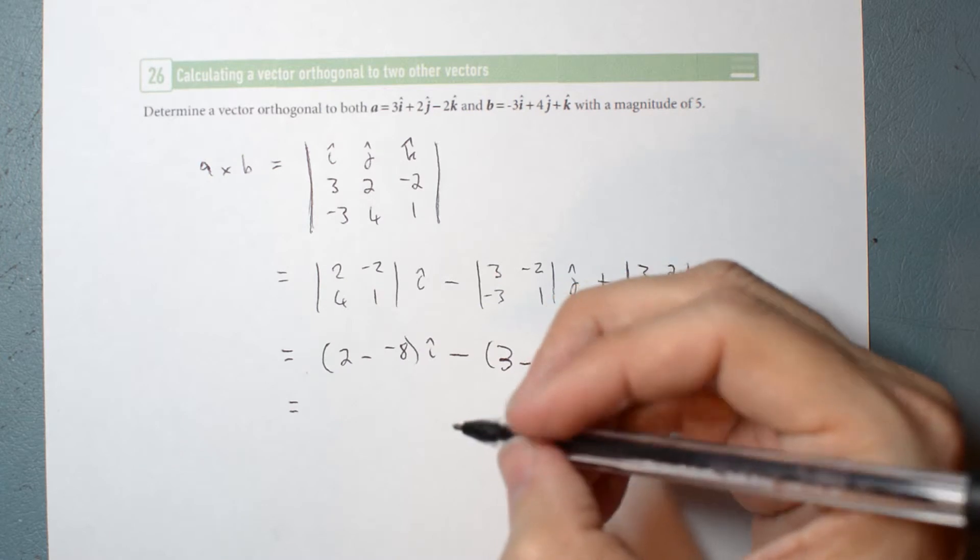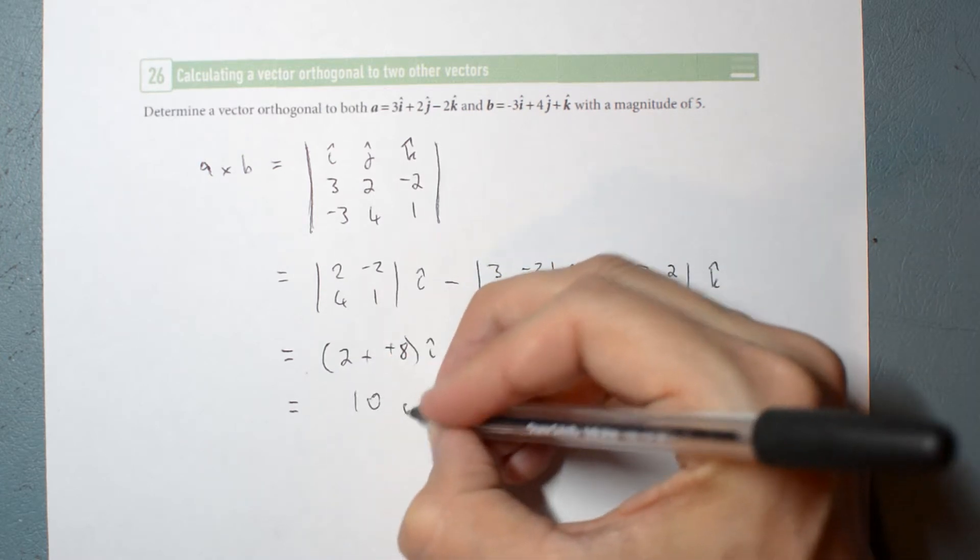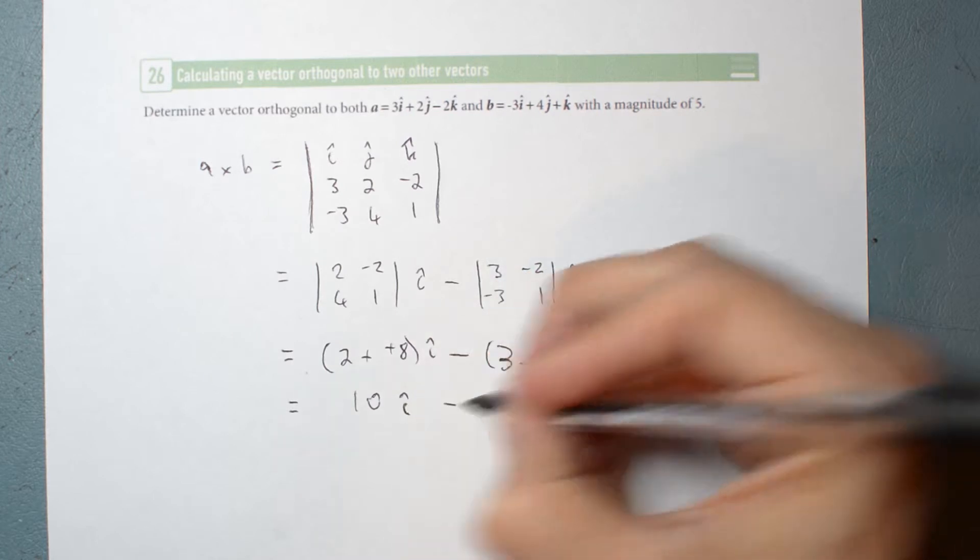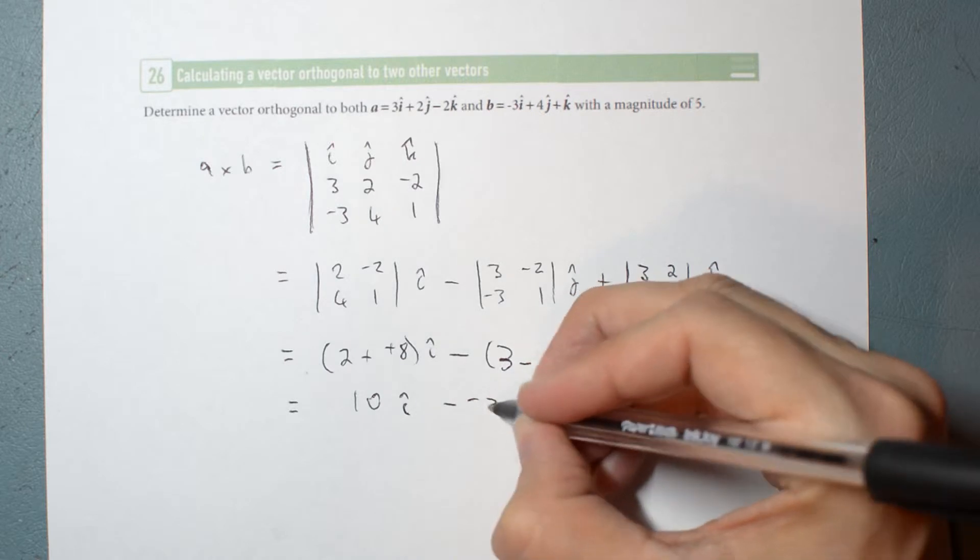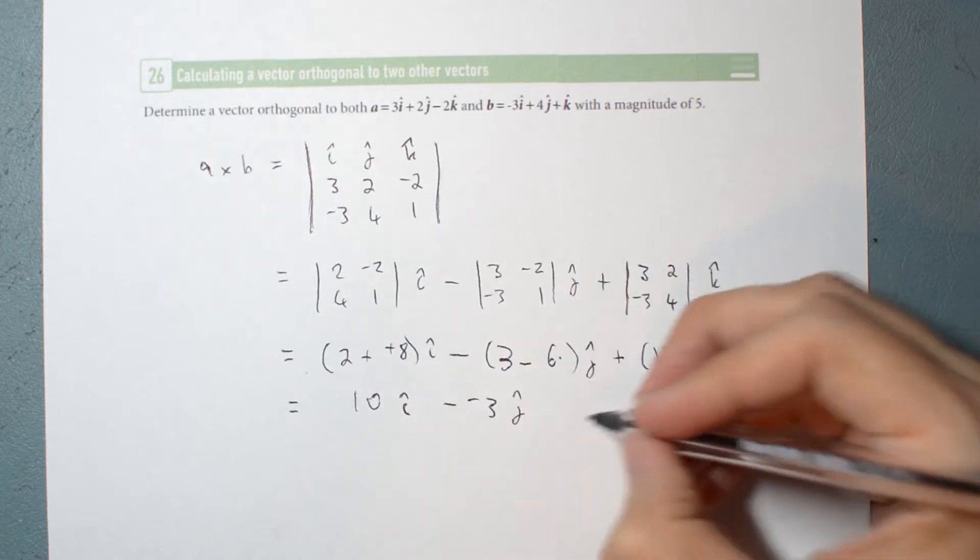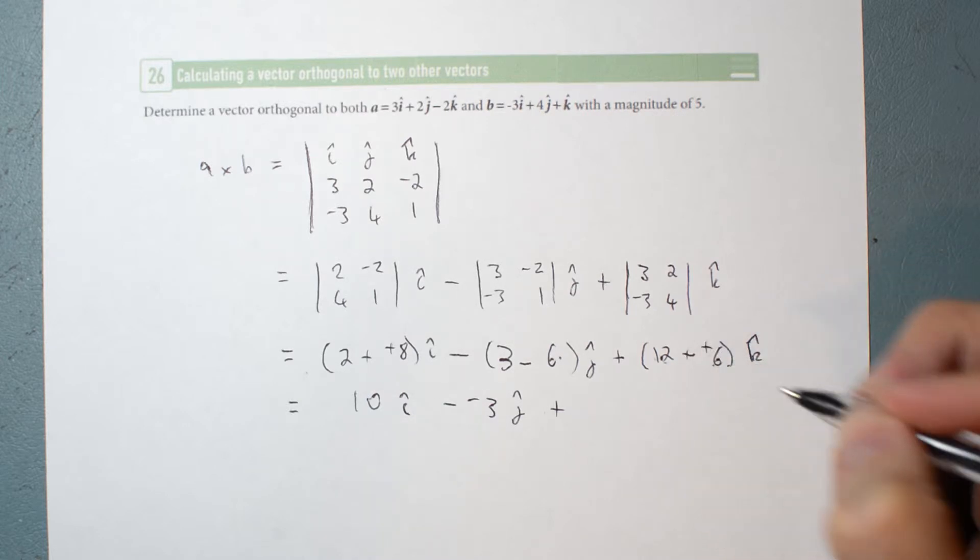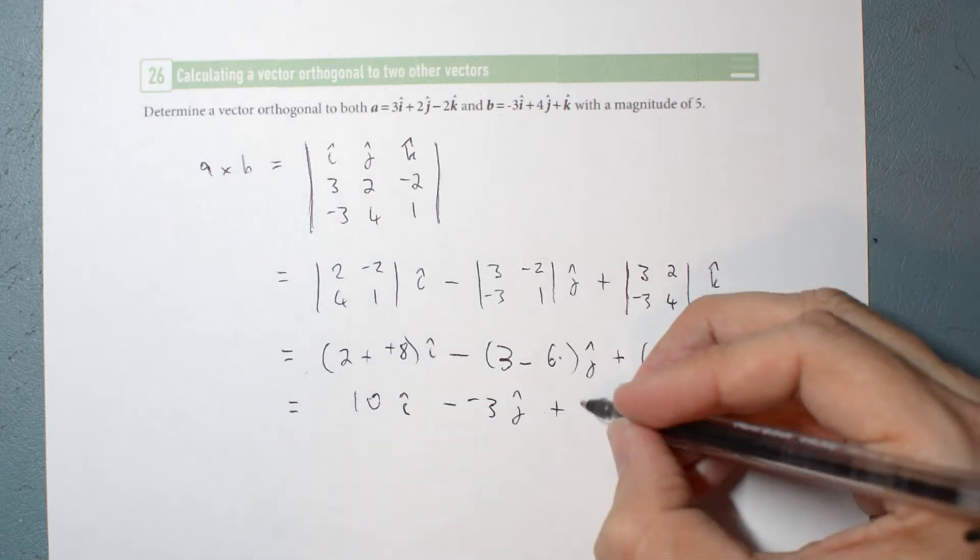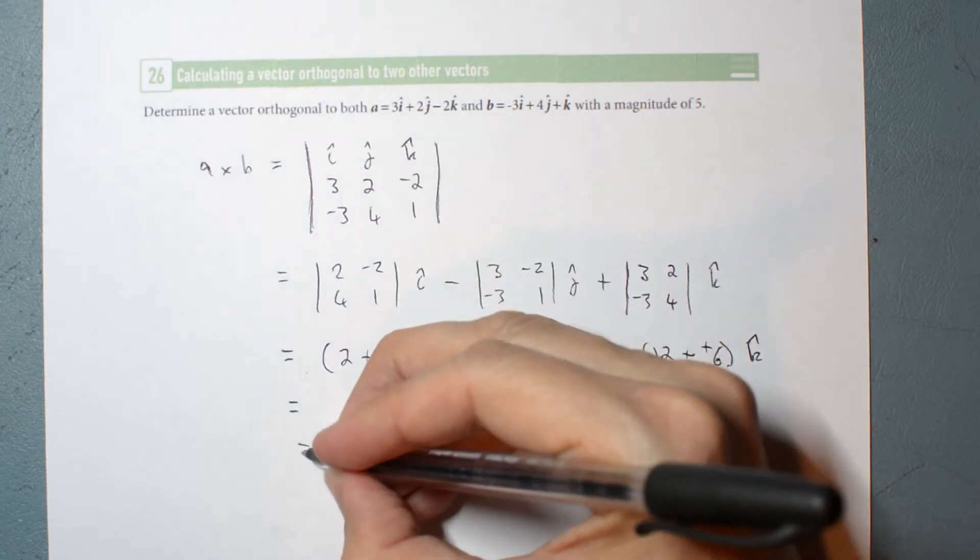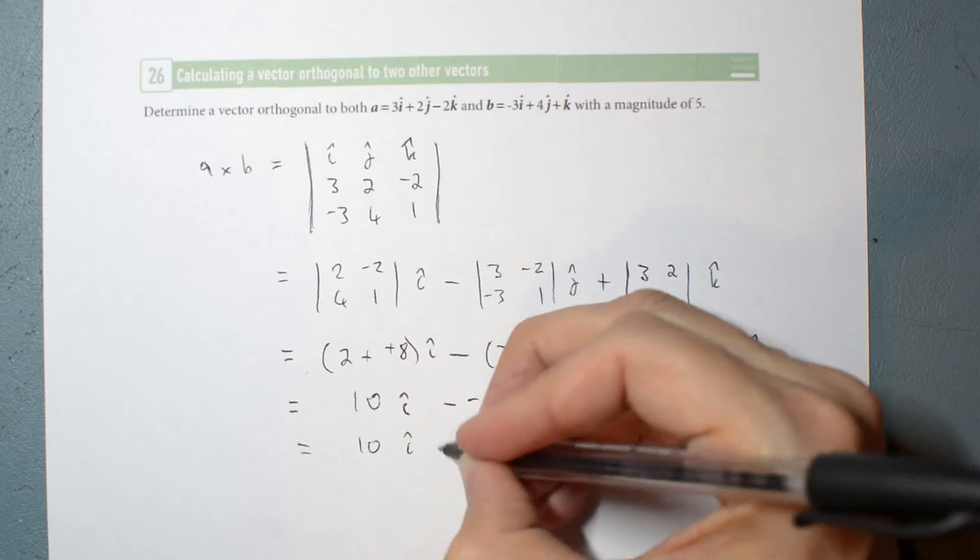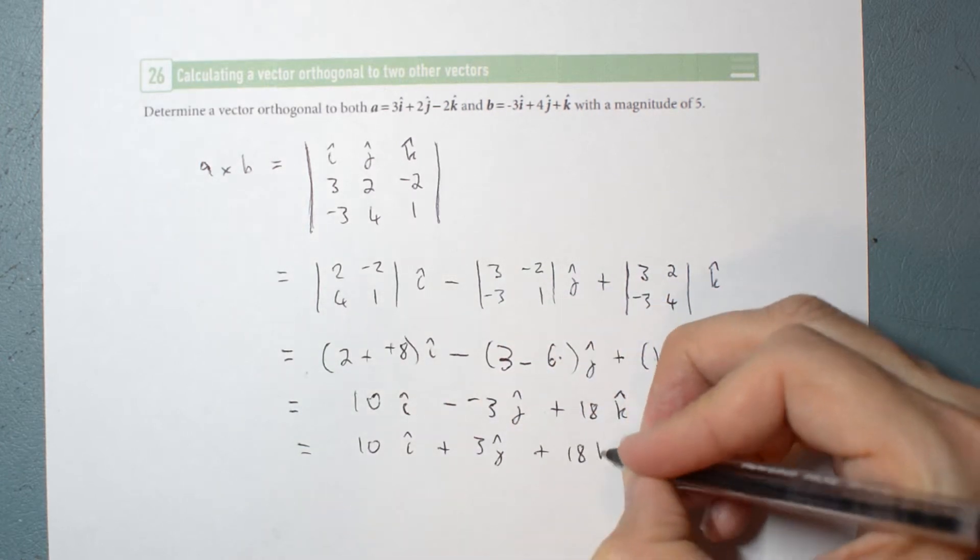That is 2 plus 8, 10 I hat, minus 3 take 6, minus negative 3 J hat, plus 12 take negative 6, is 12 plus 6, which is 18 K hat. And just to make sure I write it cleanly and simply: 10 I hat plus 3 J hat plus 18 K hat.